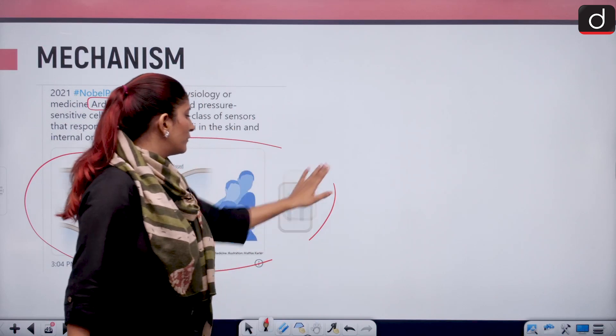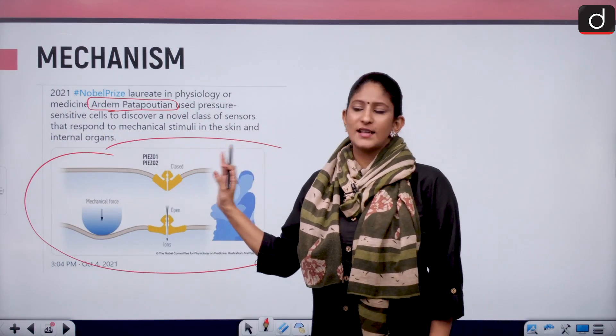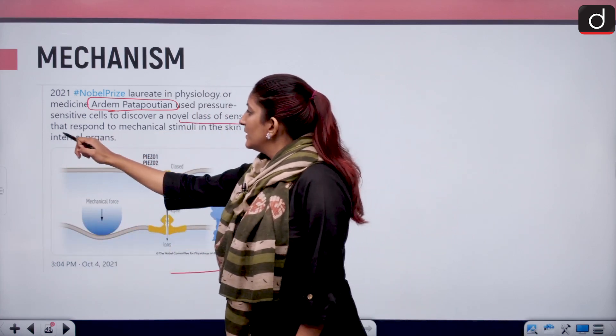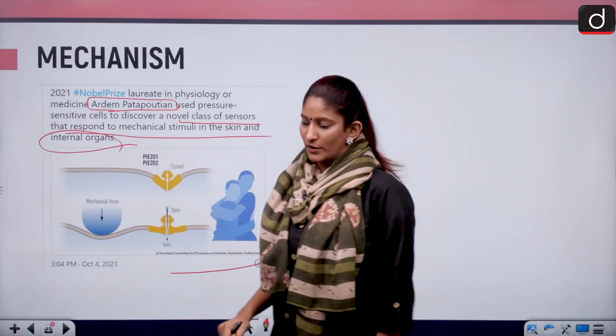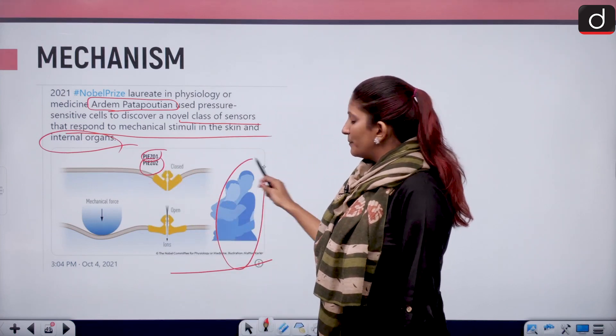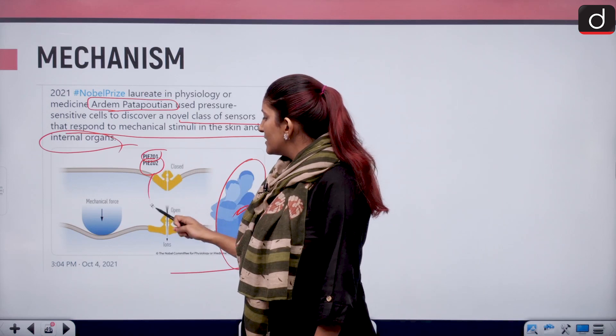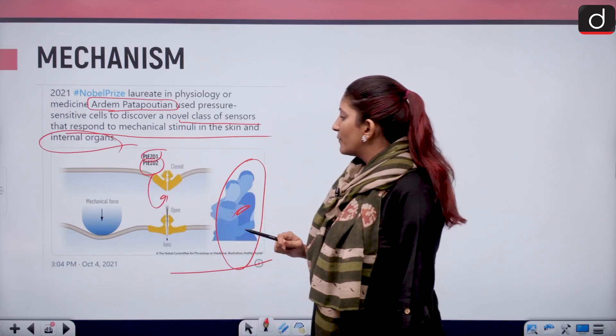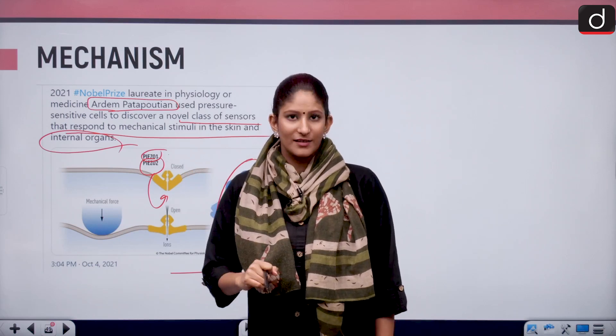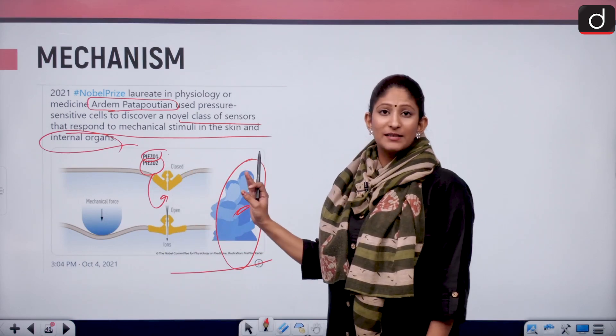But suppose this cell is responsible for feeling pressure. This has been poked. Now what will happen? This will send stimulus to the brain that the body is feeling pressure. Just understand that this is the experiment they have done. We do not need to go into a lot of details and just from a generalist perspective you must understand what has happened. He used pressure sensitive cells to discover a novel class of sensors that respond to mechanical stimuli in the skin and also internal organs and they named it Piezo 1 and Piezo 2. Two people are hugging, that means they are feeling pressure. Special sensory class of cells are working here. Piezo in Greek means pressure. Just understand that it could be asked in your prelims. Piezo means pressure.